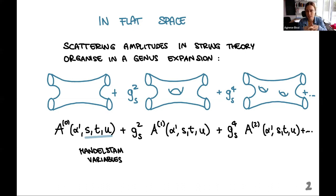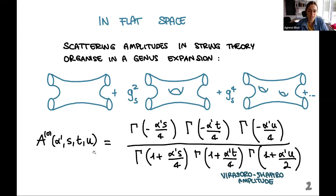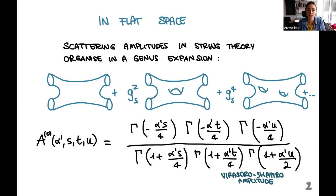The first order, genus zero, is a full function of alpha prime and the Mandelstam variables. This takes the form of the so-called Virasoro-Shapiro amplitude, which has specific poles at certain values of s, t, and u. The idea I want to convey through this talk is how to study this kind of expansion when we go from flat space to curved space, and in particular to AdS space.